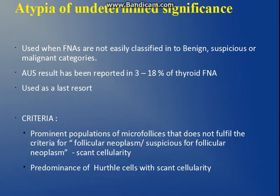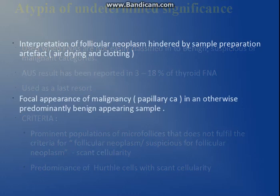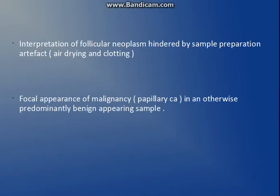The first criterion is if we have a prominent population of microfollicles present but there is scant cellularity — we can't put it into follicular neoplasm or suspicious for follicular neoplasm because of the scant cellularity. Second is when there is a predominance of Hurthle cells which we don't think is of benign origin, again with very scant cellularity.